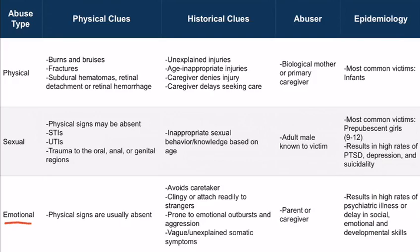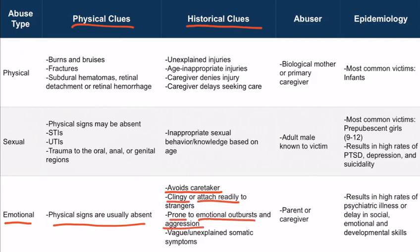Emotional abuse can have significant effects on the child. However, physical clues are often absent since it is psychological in nature, so historical clues are your best tool. When examining the child, if you see that the child avoids their caretaker, that's a sign of emotional abuse. The patient may also be clingy or attach readily to strangers, be prone to emotional outbursts and aggression, or have vague somatic symptoms like stomach aches, fatigue, or nausea. The abusers are often the parent or caregiver, and outcomes in these children can include psychiatric illness and delays in social, emotional, and developmental skills.